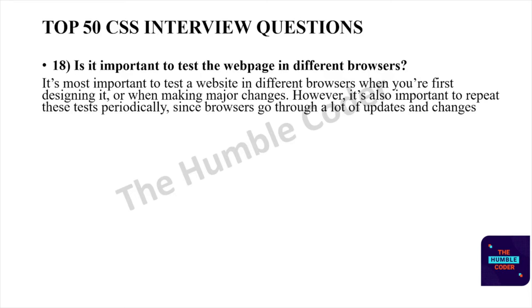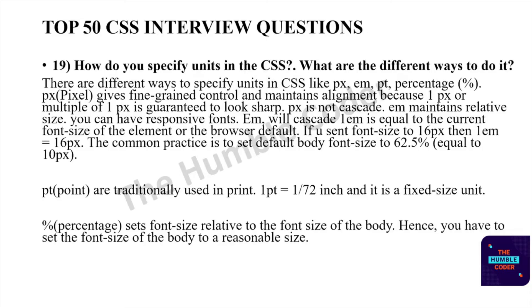How do you specify units in CSS? There are different ways: pixels (px) give fine-grained control and maintain alignment; one pixel is guaranteed to look sharp. em maintains relative size for responsive fonts — 1em equals the current font size of the element; if font size is 16px, then 1em equals 16px. The common practice is to set the default body font size to 62.5%, which equals 10 pixels. Points (pt) are traditionally used in print — 1pt equals 1/72 inch, a fixed size unit. Percentage sets the font size relative to the body font size.